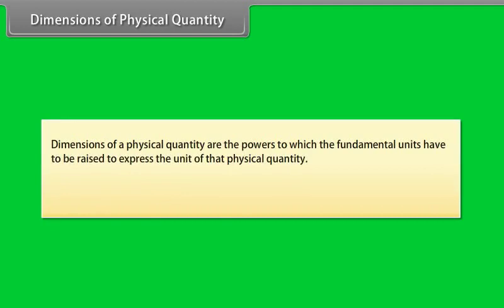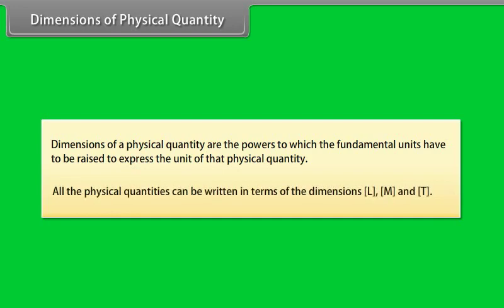Dimensions of physical quantity. Dimensions of a physical quantity are the powers to which the fundamental units have to be raised to express the unit of that physical quantity. All the physical quantities can be written in terms dimensions L, M and T.